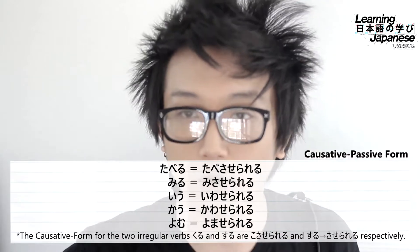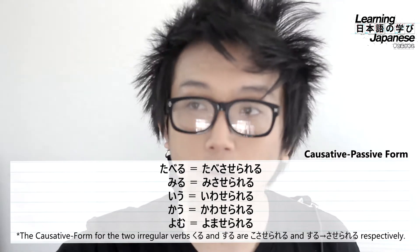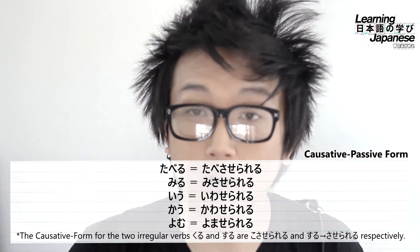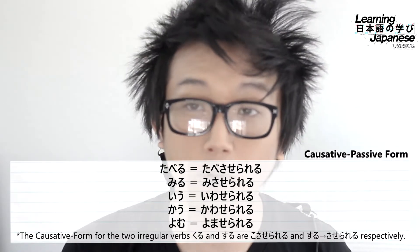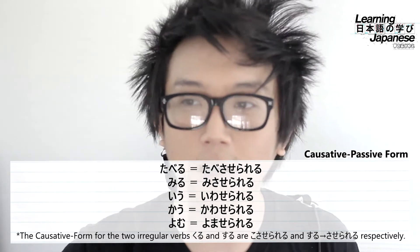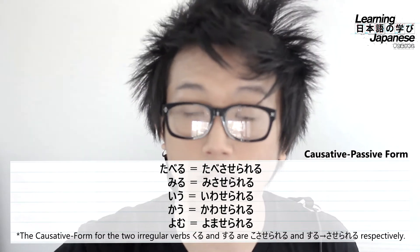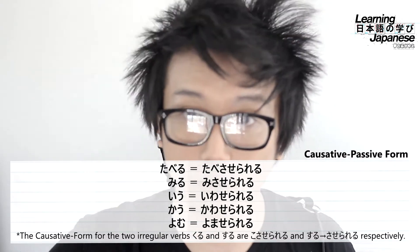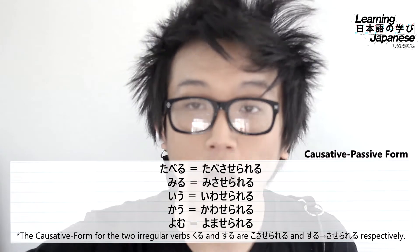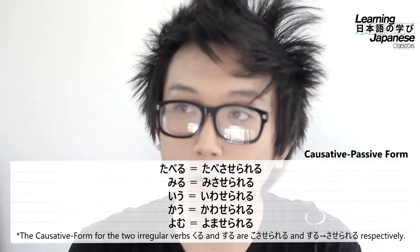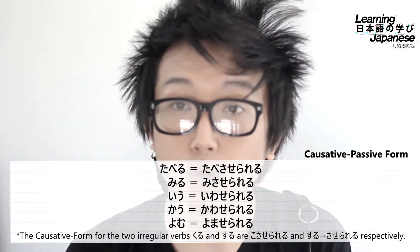The word taberu, 'to eat,' turns into tabesaserareru. The word miru, 'to see/watch,' turns into misaserareru. Next, iu, 'to say/speak' — this is the first word that won't have sa at the beginning of the ending; instead it gets wa, so iu becomes iwaserareru. Then kau, 'to buy,' changes into kawaserareru. And yomu, 'to read,' turns into yomaserareru.